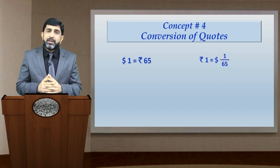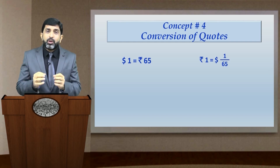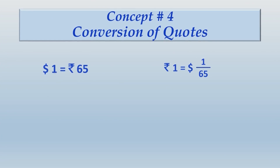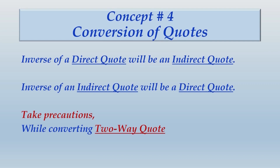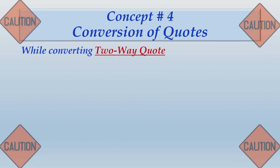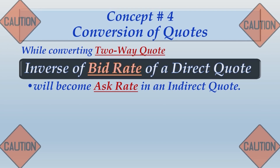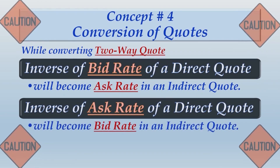But friends, you will have to take precautions while dealing with a two-way quote. What kind of precautions? The inverse of direct and indirect quotes work as follows: the inverse of the bid rate of a direct quote will become the ask rate in an indirect quote. The inverse of the ask rate of a direct quote will become the bid rate in an indirect quote.